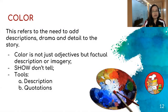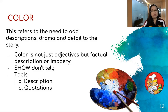Color refers to the need to add description, drama, and detail to the story. Color is not just a bunch of adjectives but factual description or imagery. The idea is that you want to bring your readers closer to the event or place — for example, in a travel feature, you want them to feel like they were there, through the magic of words. The tools we will discuss are description and the use of quotations.